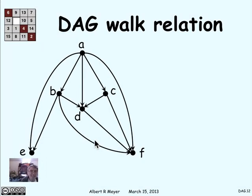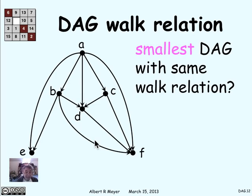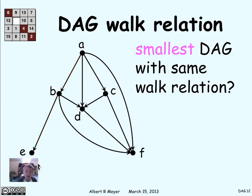When looking at a DAG, we're usually interested in just the walk relation of the DAG. Many different DAGs can have the same walk relation, and it's natural to ask what's the most economical one — is there a minimum DAG that defines a given walk relation? Here's a simple DAG, and you can check there are no cycles. To find the smallest DAG with the same relation, go through edges one at a time and ask whether you can remove each one. For example, there's a path from A to E going through B, so the direct edge from A to E isn't contributing anything — you can remove it and still walk from A to E via B.